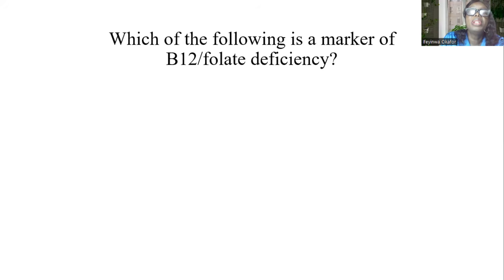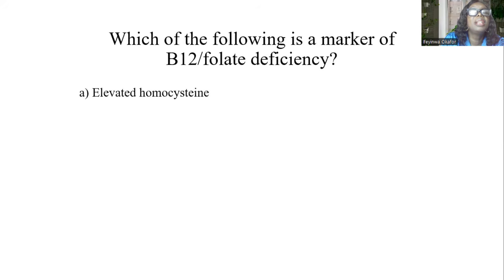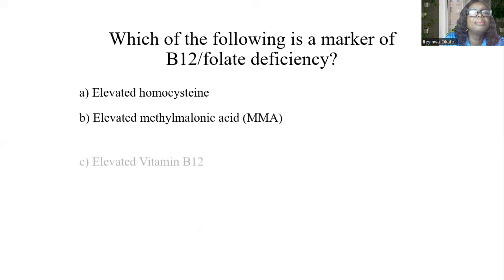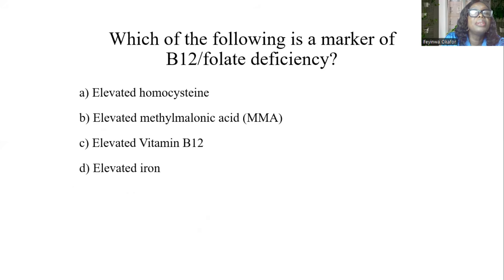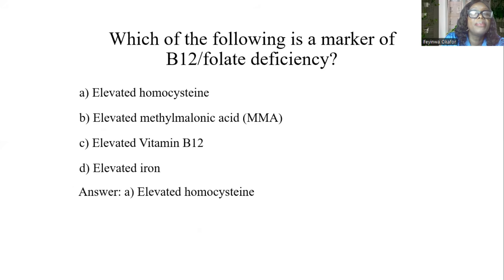Which of the following is a marker of B12 and folate deficiency? A, elevated homocysteine. B, elevated methylmalonic acid. C, elevated B12. D, elevated iron. And the answer is A, elevated homocysteine.